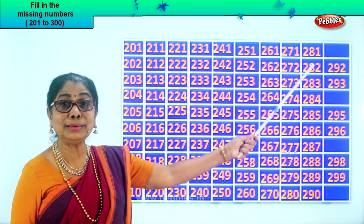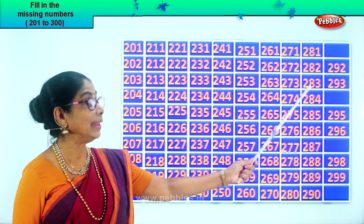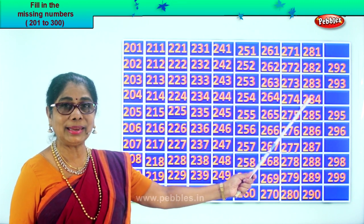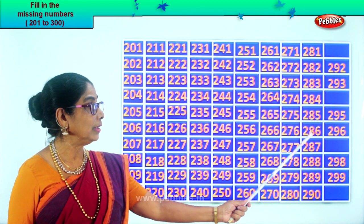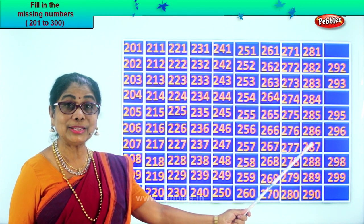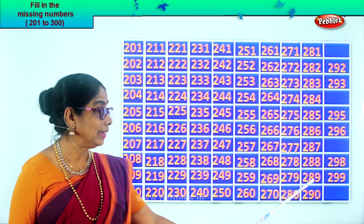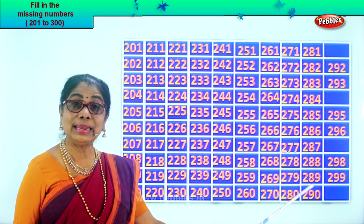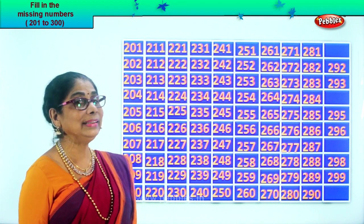Two hundred and eighty-one, two hundred and eighty-two, two hundred and eighty-three, two hundred and eighty-four, two hundred and eighty-five, two hundred and eighty-six, two hundred and eighty-seven, two hundred and eighty-eight, two hundred and eighty-nine, two hundred and ninety.